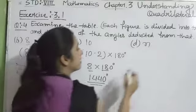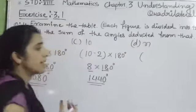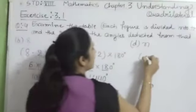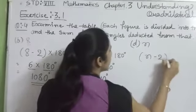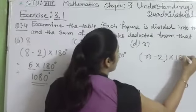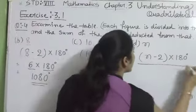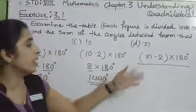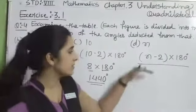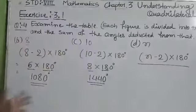Now last is n. n is the number of sides, so n minus 2 into 180 degrees. So this is the answer for n-sided polygon. This is question 4.